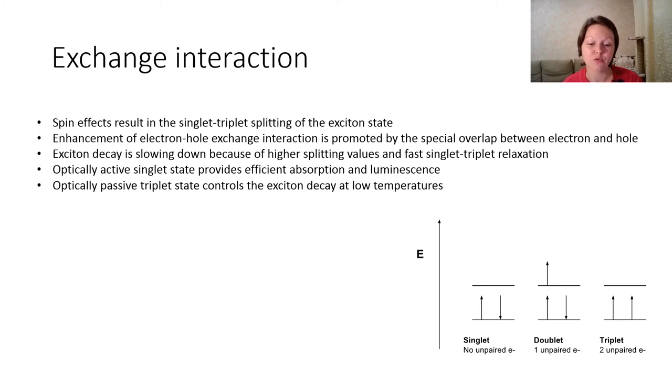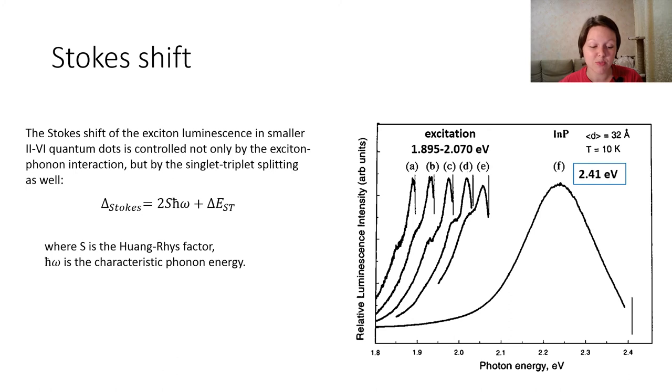The next step towards understanding the real quantum dot structure is to introduce electron and hole spin into consideration. Spin effects result in the singlet-triplet splitting of the exciton state because of the electron-hole exchange interaction. This splitting is rather small for the bulk crystals as compared with the thermal Boltzmann energy. However, quantum confinement is found to increase this splitting. Enhancement of electron-hole exchange interaction is promoted by the spatial overlap between electron and hole, which is favored by quantum confinement. Optically active singlet states provide efficient absorption and luminescence, while optically passive triplet states control the exciton decay at low temperatures. Singlet-triplet splitting was found to contribute to the luminescence Stokes shift of the zero-phonon line. The Stokes shift was found to grow monotonically as the crystallite size decreases.